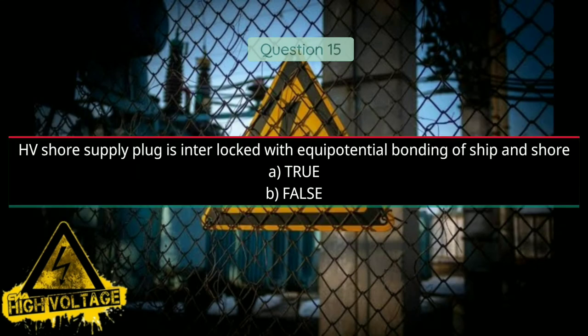Question number fifteen: High-voltage source supply plug is interlocked with equipotential bonding of ship and shore. Option A: true, Option B: false. Answer will be A, true.